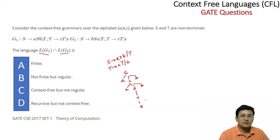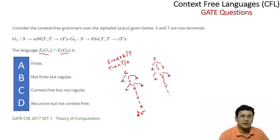So the first expansion gives A^1 B^1. If we expand once more: S → ASB → A(ASB)B, and the inner S → T → cT → c(epsilon), we get A^2 c B^2. So the grammar is producing strings of the form A^n C^m B^n.